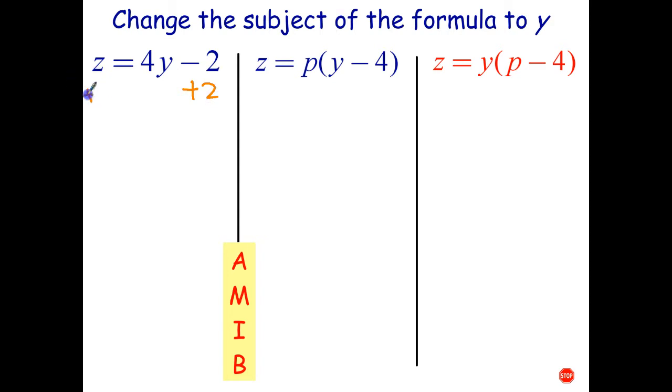So, I'm going to add 2 to both sides. Minus 2 plus 2 goes to 0. I'll write the 4y on the left and the z plus 2 on the right. And then divide both sides by 4.